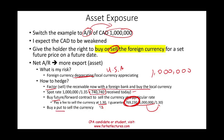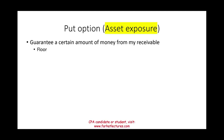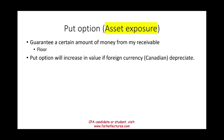A put option gives you the right to sell the currency, and you use it when you're expecting to receive the currency. The purpose of the put option is to guarantee a certain floor on the amount of money from your receivable — same as the forward and futures contract. The put option increases in value if the Canadian dollar depreciates: as your accounts receivable value goes down due to foreign currency depreciation, your put option goes up, offsetting the loss.